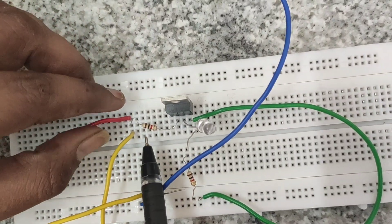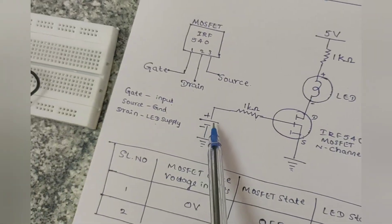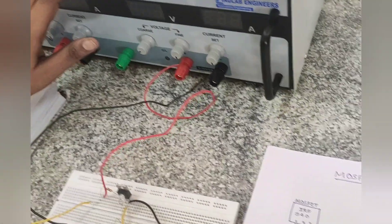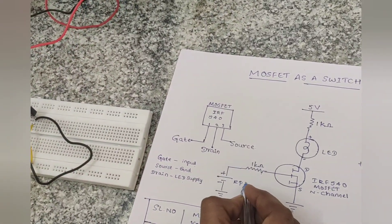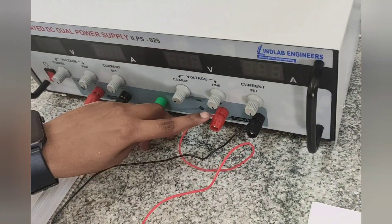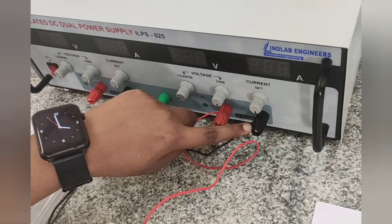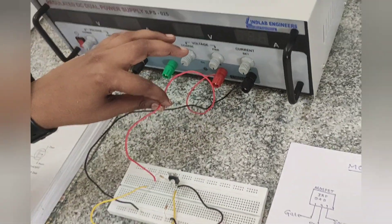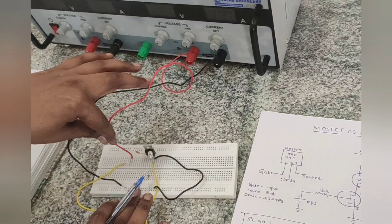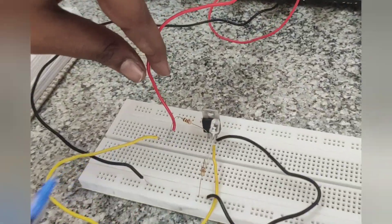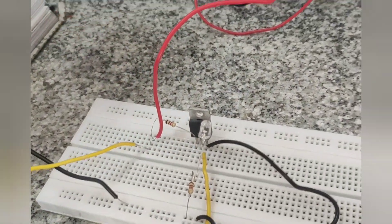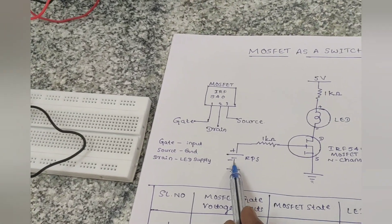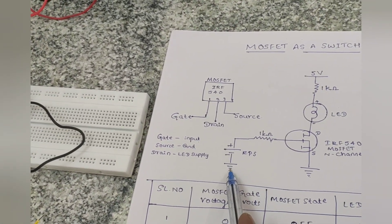Here we are also using a Regulated Power Supply. It has 2 terminals: positive and negative. The positive terminal of the RPS is connected to the resistor, and the negative terminal of the RPS is connected to the ground.